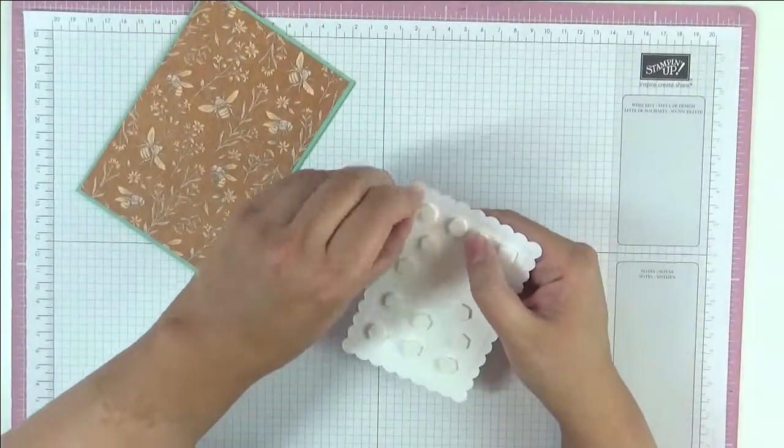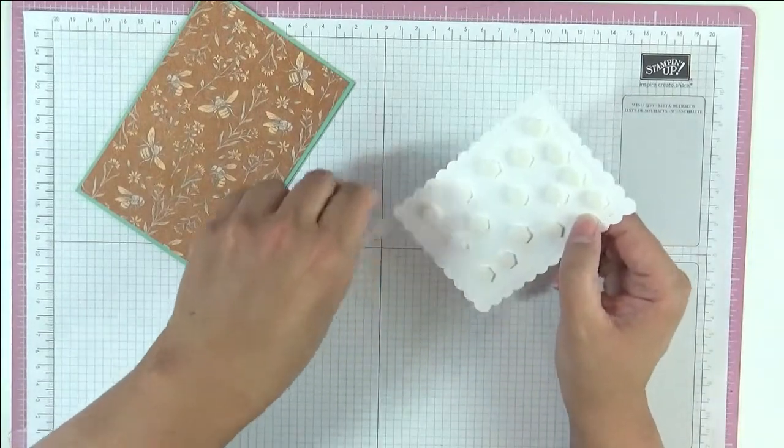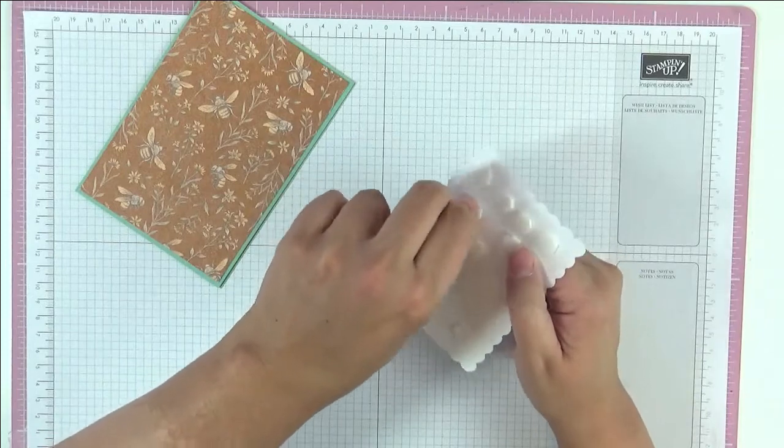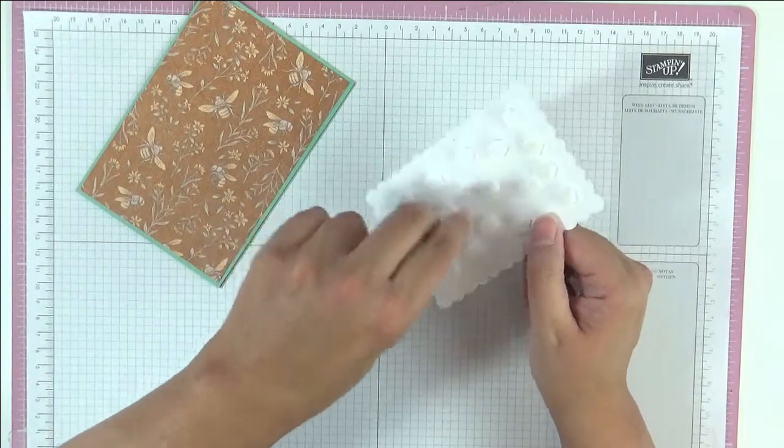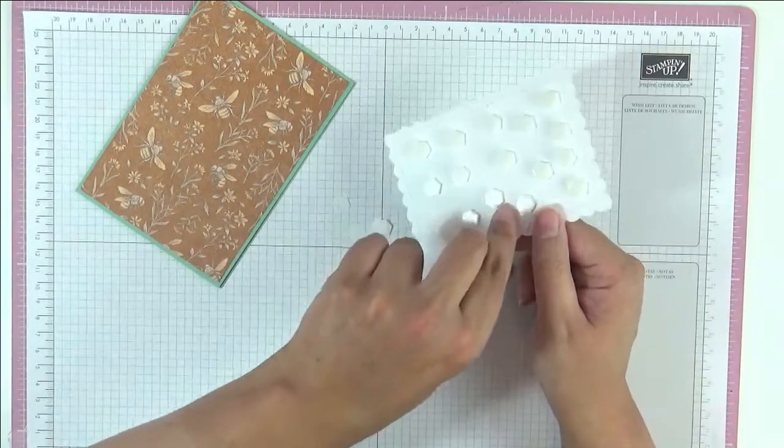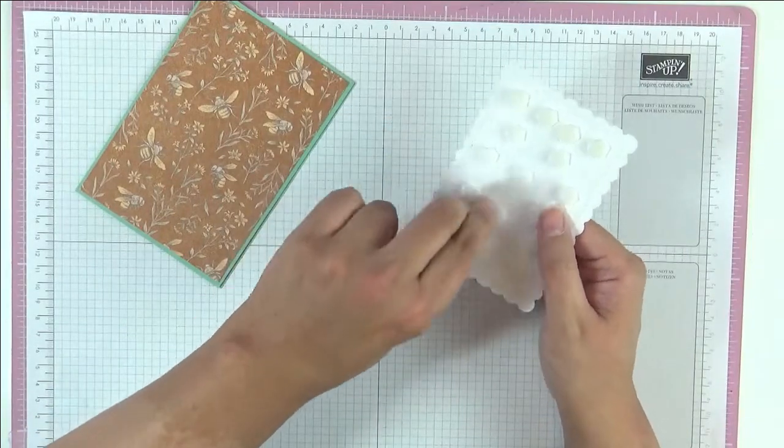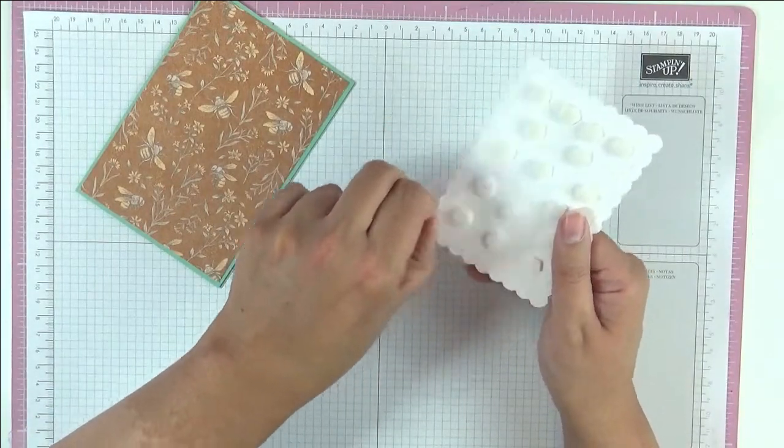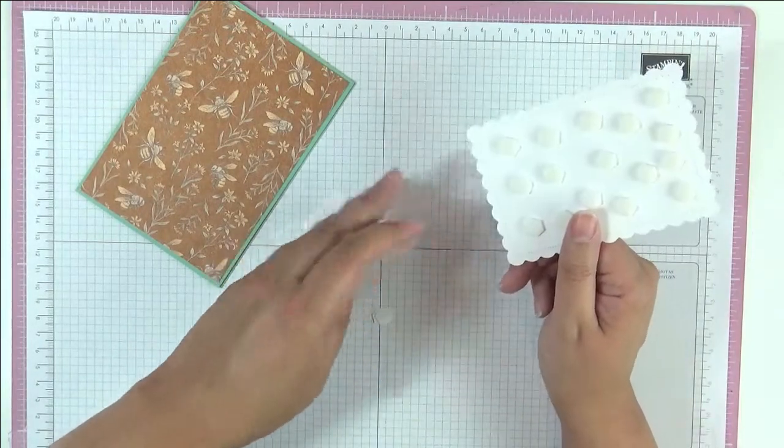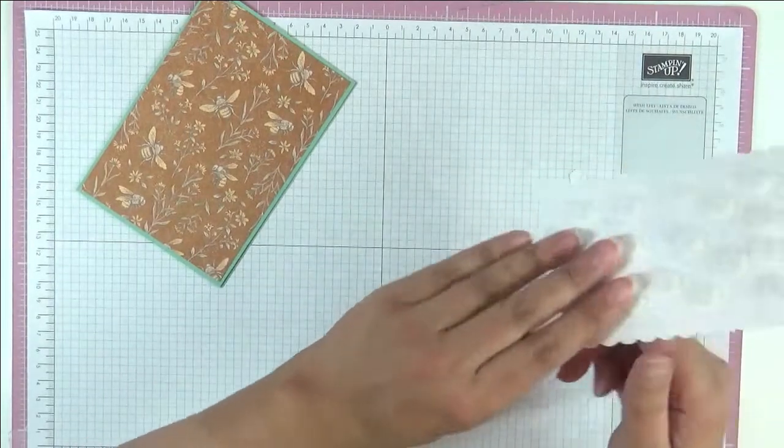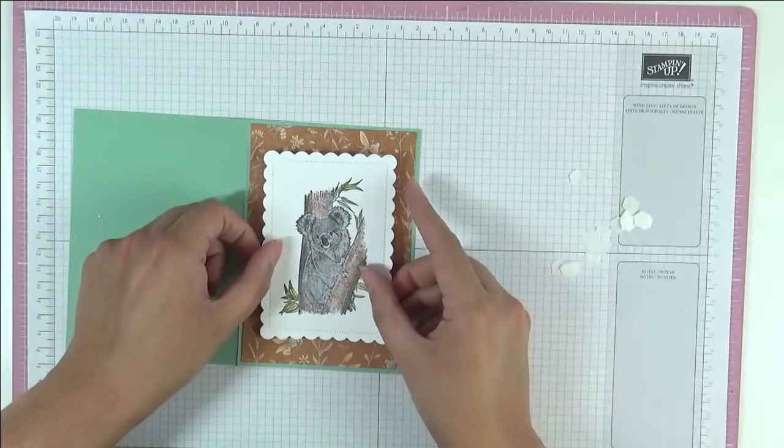And let's start the laborious task of taking all these blooming backings off. My pet hate in crafting is taking backings off dimensionals, but there you go, has to be done. So I hope you're all enjoying yourselves and enjoying the video. If you are, I'd be grateful if you give it a thumbs up so YouTube know. It really helps. And please don't forget to subscribe for future videos.